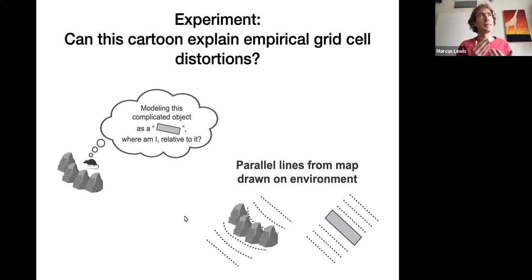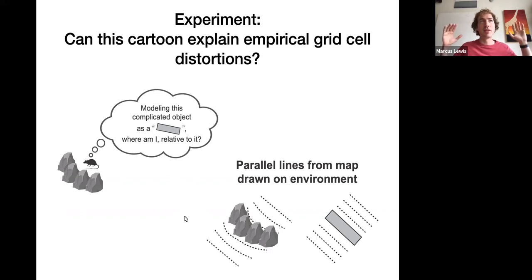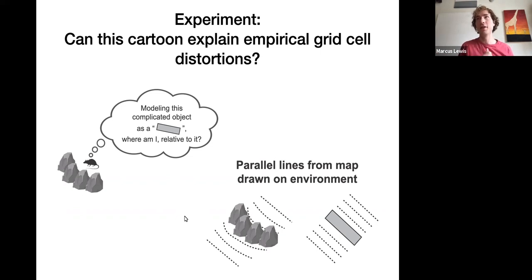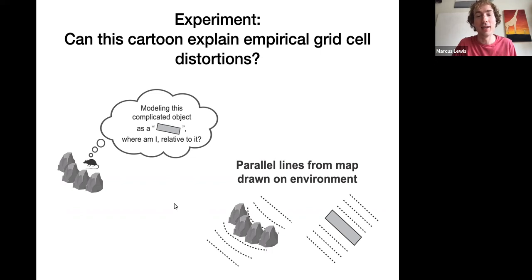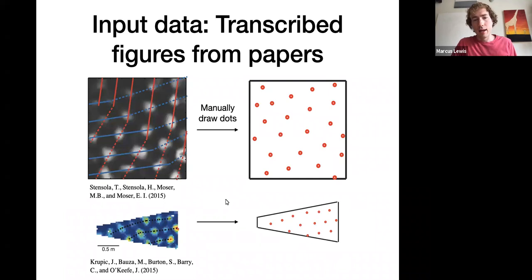Parallel lines on the rat's map relative to that rectangle will tend to not always be parallel in the real world, especially as you get close to the object. People familiar with grid cell distortions know they tend to occur near boundaries or near objects. This seems like a plausible and elegant answer, fitting with what we'd expect intelligent systems to do - take input and describe it in terms of idealized objects.